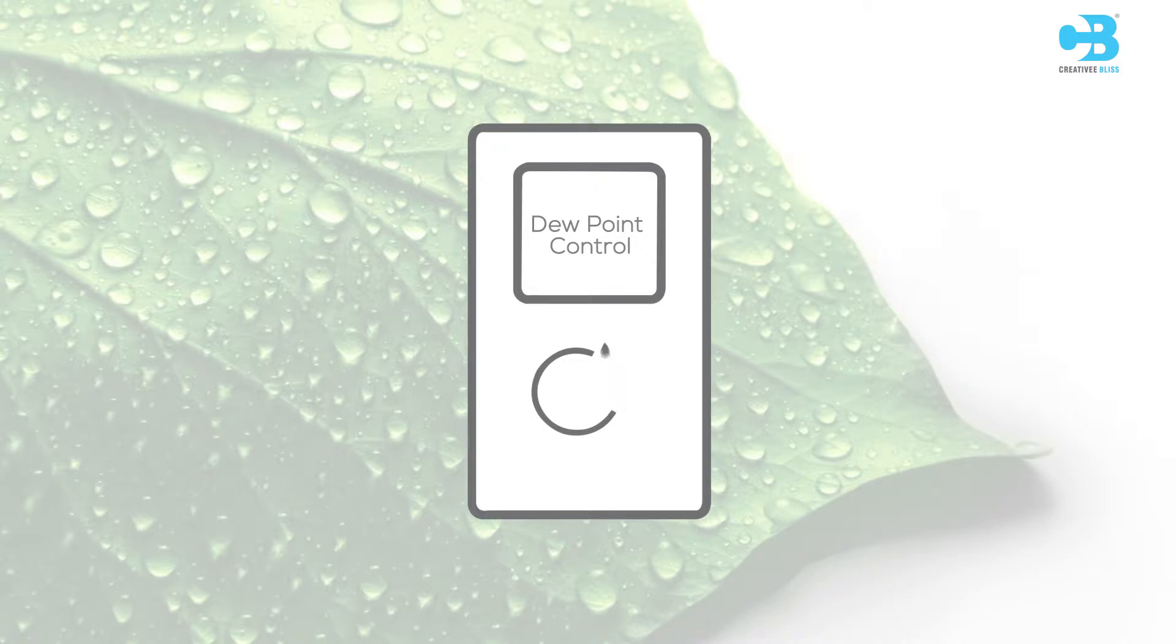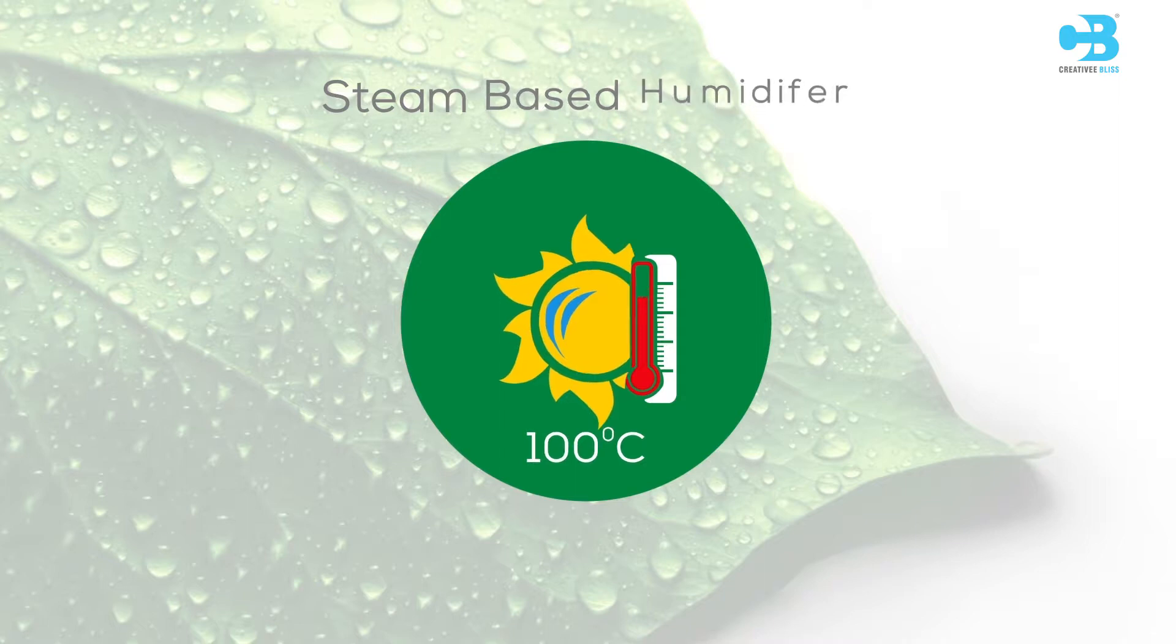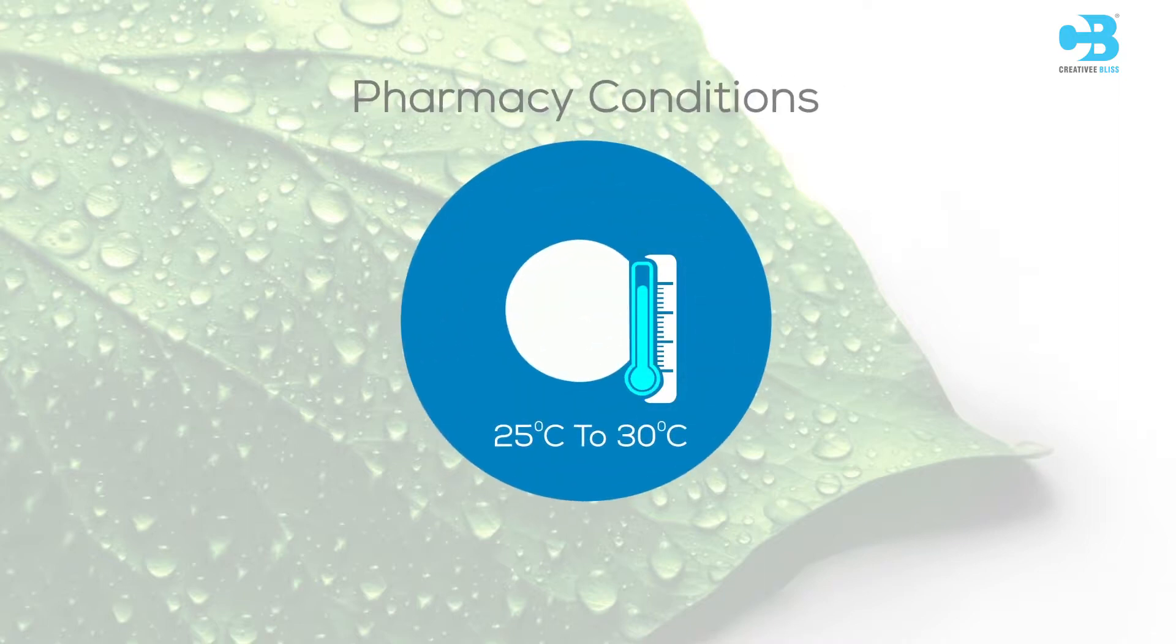Steam-based humidifiers generate humidity at high temperatures of 100 degrees Celsius. However, the acceptable range of temperature is 25 degrees Celsius to 30 degrees Celsius in pharmaceutical applications.